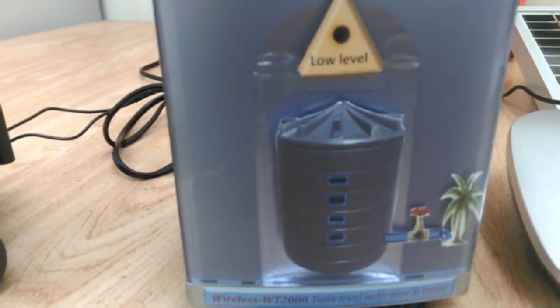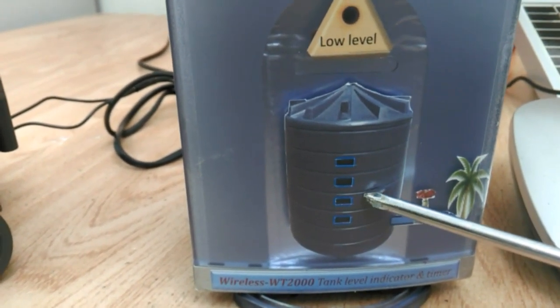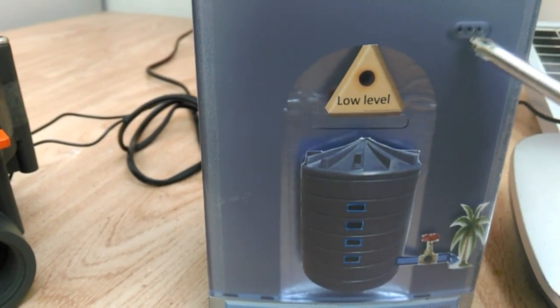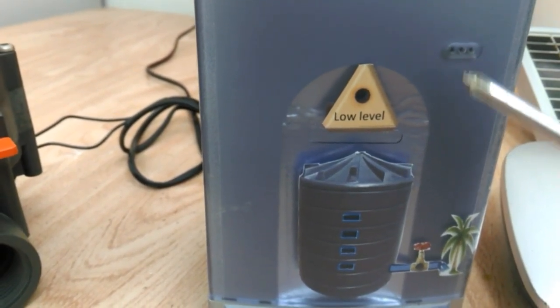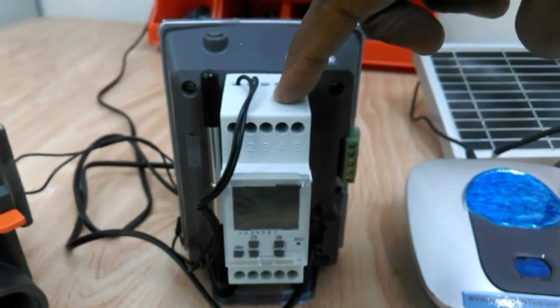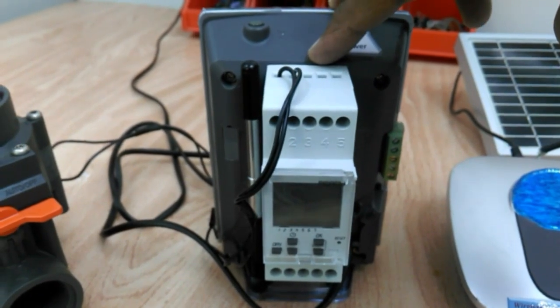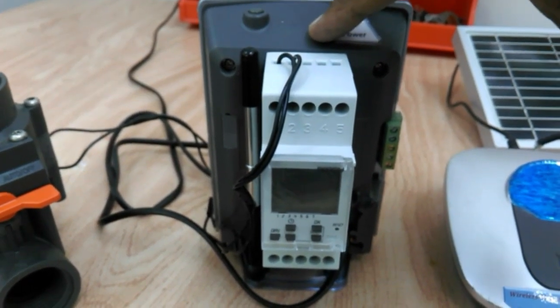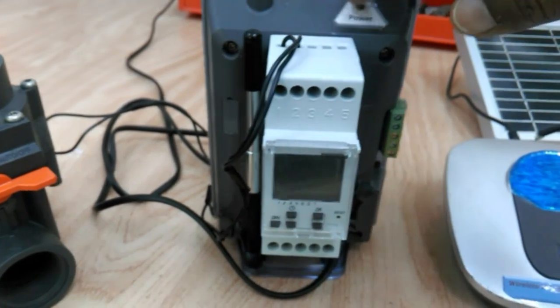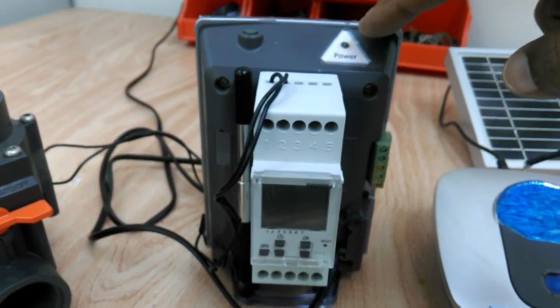The display unit displays the water in four steps LEDs, that is 25%, 50%, 75%, and 100%. Visible low level alarm is there and audible also, which we will demonstrate later. The irrigation timer is attached to the display unit. So in case of low water level alarm, the timer output will be defeated and the irrigation will be disabled to keep minimum water.